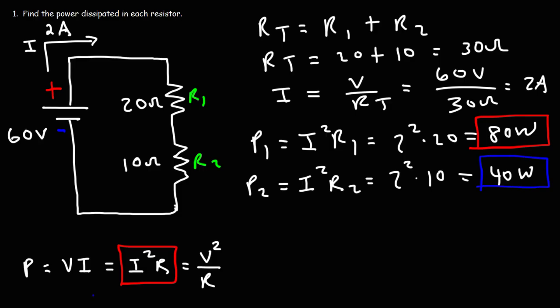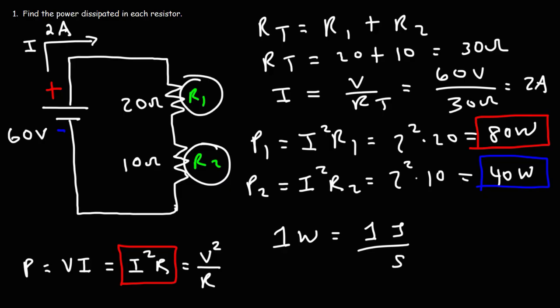Power is the rate at which energy is delivered to a device. A power of 1 watt means that 1 joule of energy is delivered each second, so in 10 seconds, 10 joules of energy is being delivered. R2 is converting 40 joules of electrical energy into heat every second, so in 10 seconds it converts 800 joules of electrical energy into thermal energy.